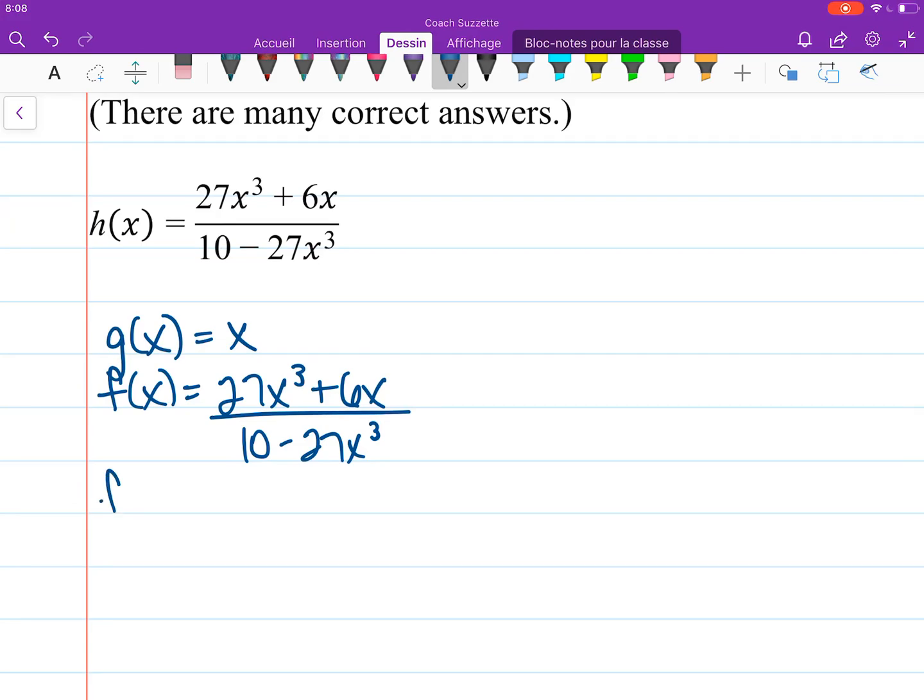Well, let's check. What's f of g of x? Well, that's f of x. So that's going to be substituted here, here, and here. Which will give us 27x cubed plus 6x divided by 10 minus 27x cubed, which is what we wanted.